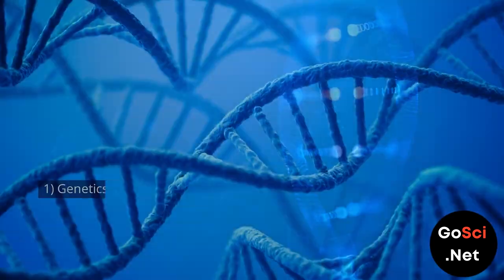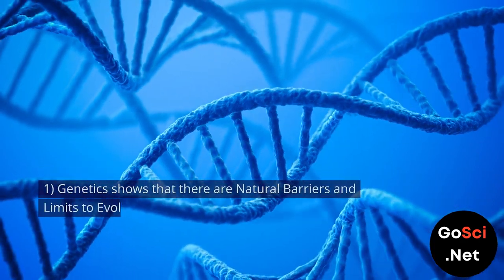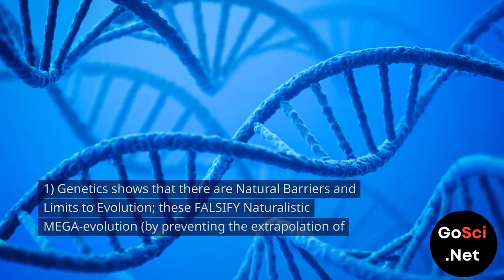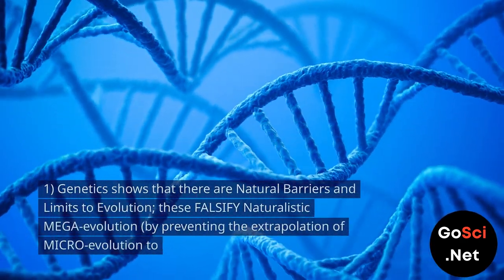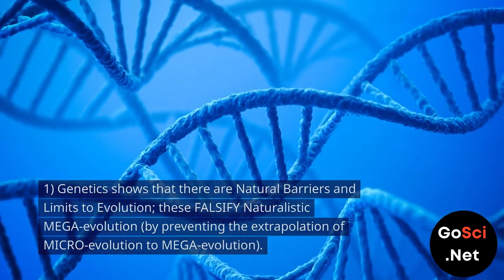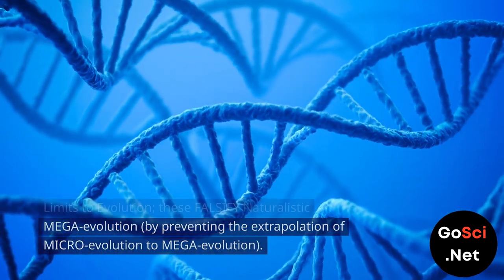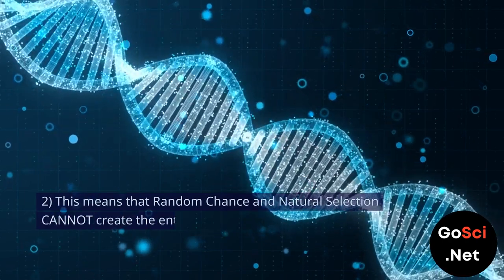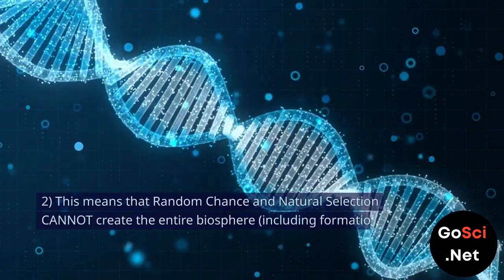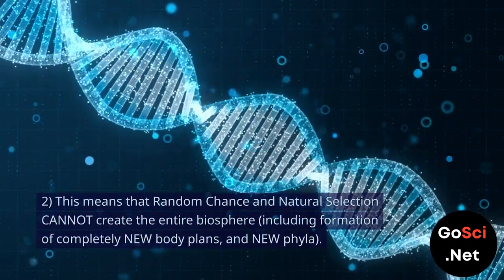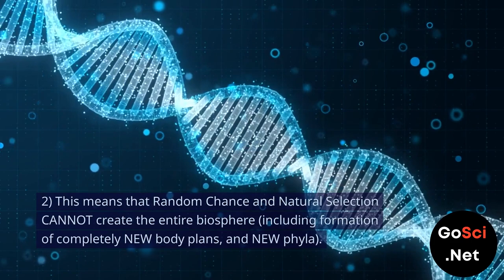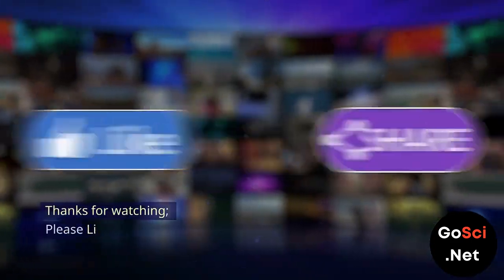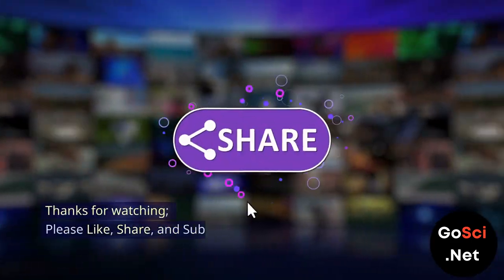Conclusion: 1. Genetics shows that there are natural barriers and limits to evolution. These falsify naturalistic mega-evolution by preventing the extrapolation of micro-evolution to mega-evolution. 2. This means that random chance and natural selection cannot create the entire biosphere, including formation of completely new body plans and new phyla. Thanks for watching. Please like, share, and subscribe.